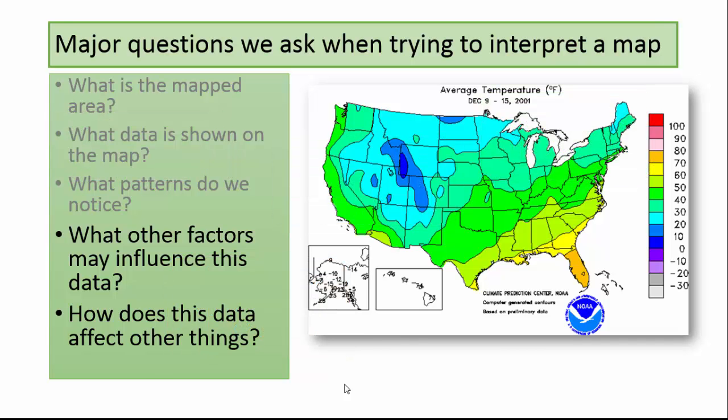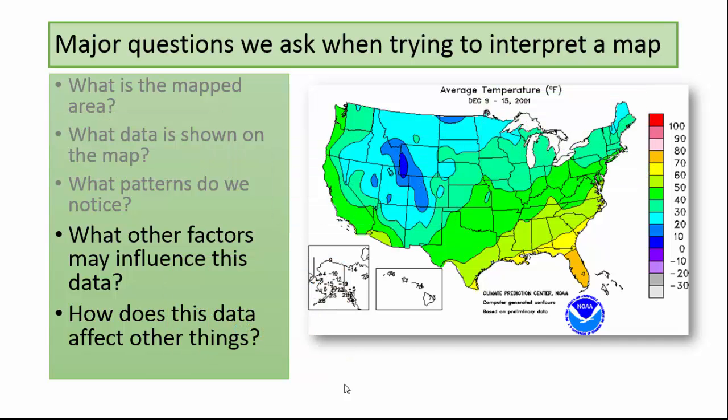I encourage you to try this thought process out on some of the other maps in your atlas — for example, consider the population density map found on page 48. Interpreting maps is probably the most important skill for a geographer to have. We will use these skills throughout the quarter, starting with Lab 2.